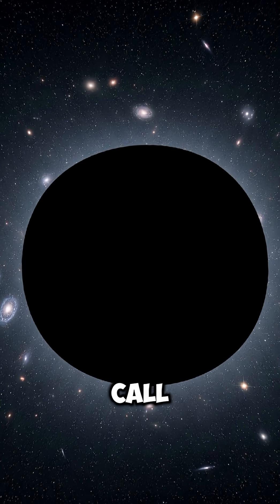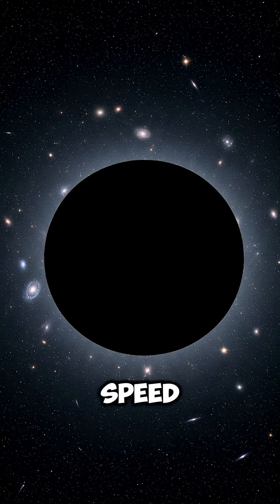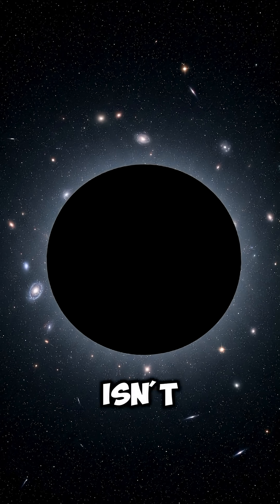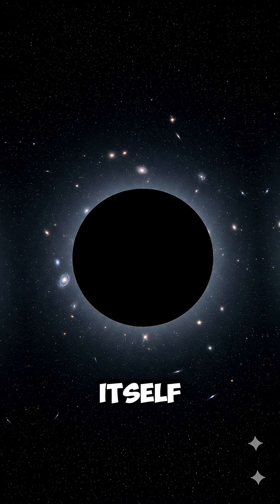So what we call a hole is really just a region of space where the escape velocity exceeds the speed of light. The black part isn't a tunnel or gap, it's simply the absence of light, because light itself can't get out.